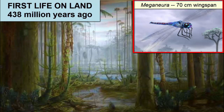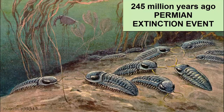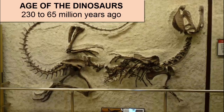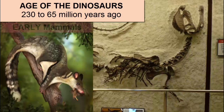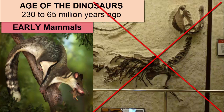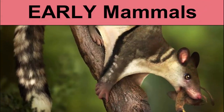438 million years ago is our first evidence of organisms moving onto land, including the first plants and insects. 245 million years ago was the largest mass extinction on the planet, during which the trilobites and many other early forms of life went extinct. Dinosaurs evolved soon after and dominated the planet during the age of the dinosaurs, which lasted from 230 to 65 million years ago.